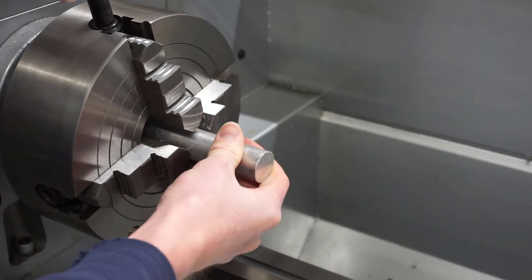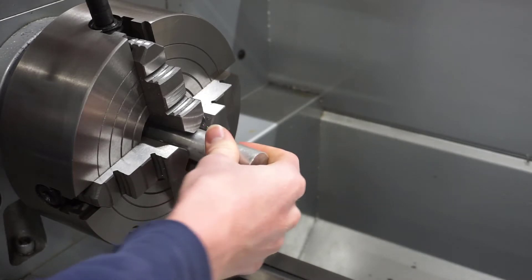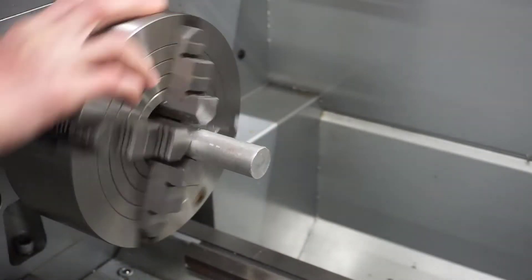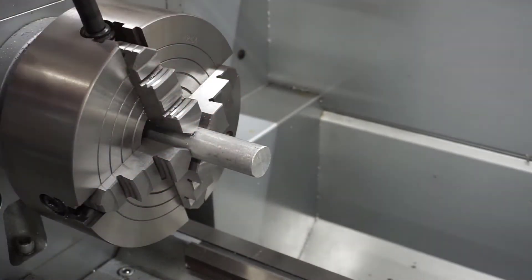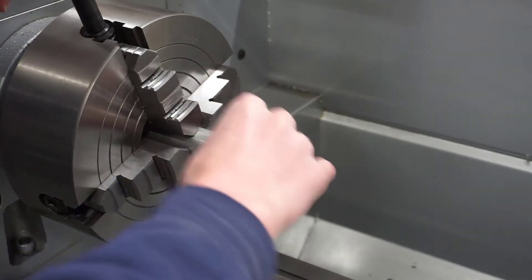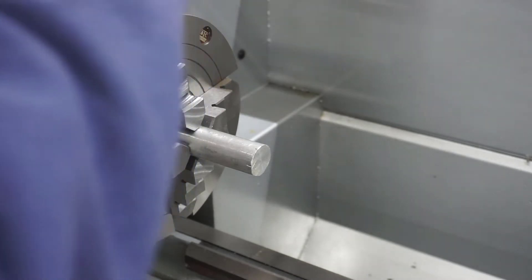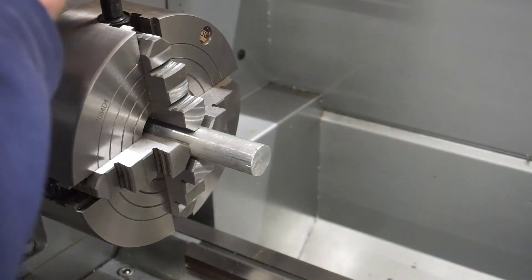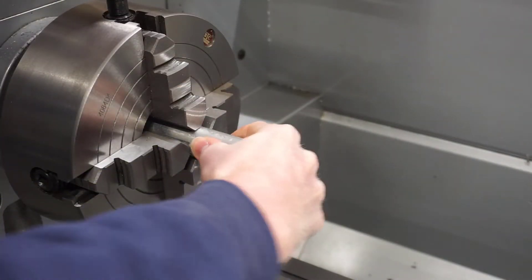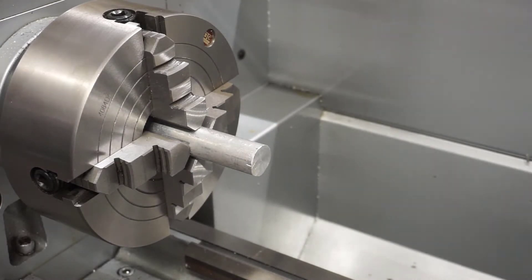As you get closer, you'll want to test fit your part to check your alignment. Again, you're just using a visual alignment of the jaws to the approximate part size. Be sure that you've got the part centered in the jaws. Give it a wiggle with your hand. And that's the rough alignment process.